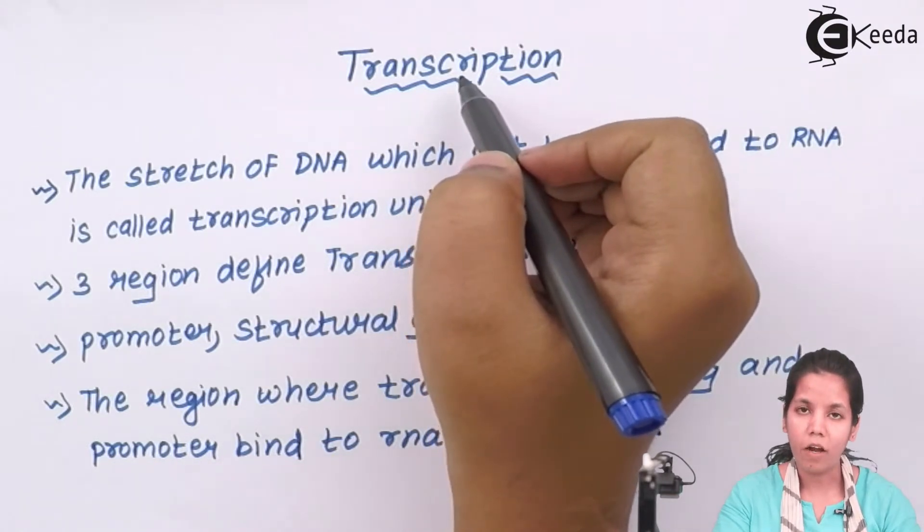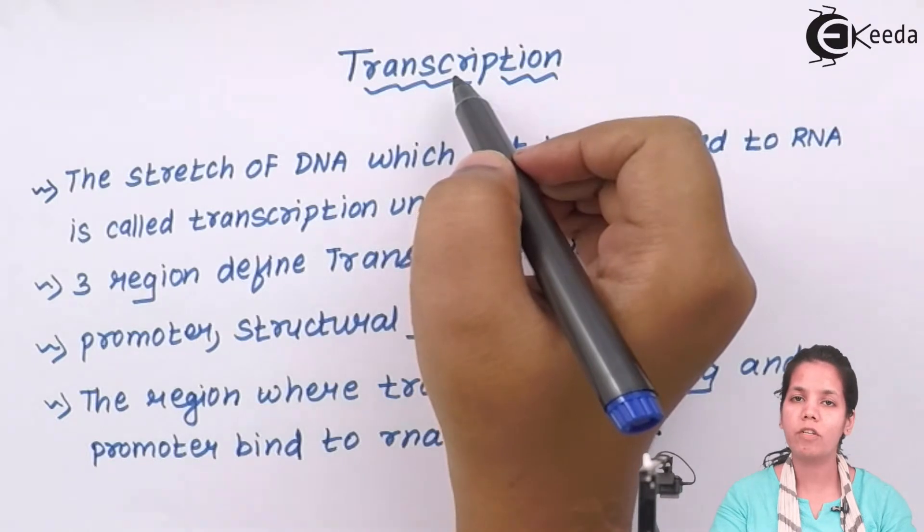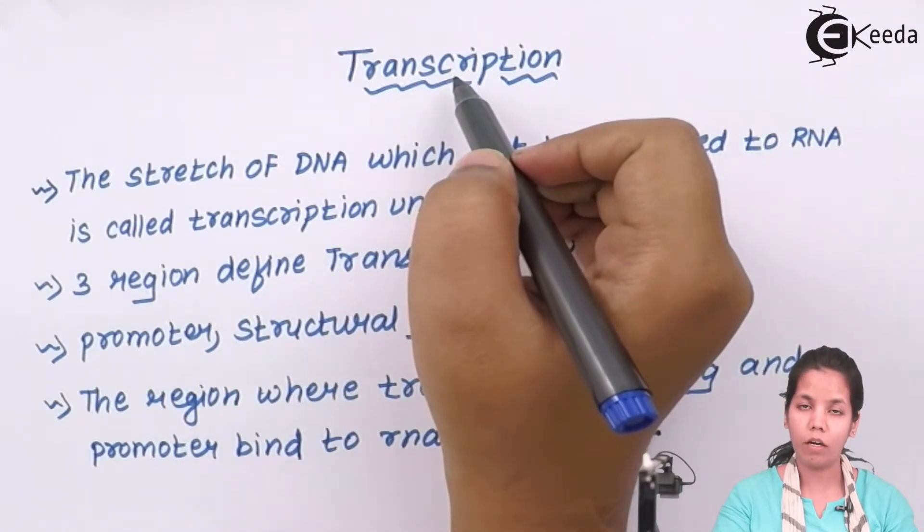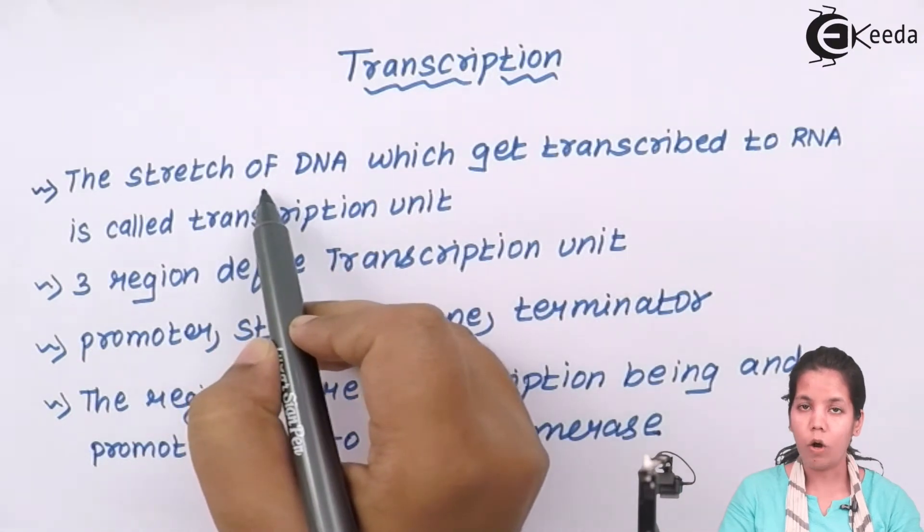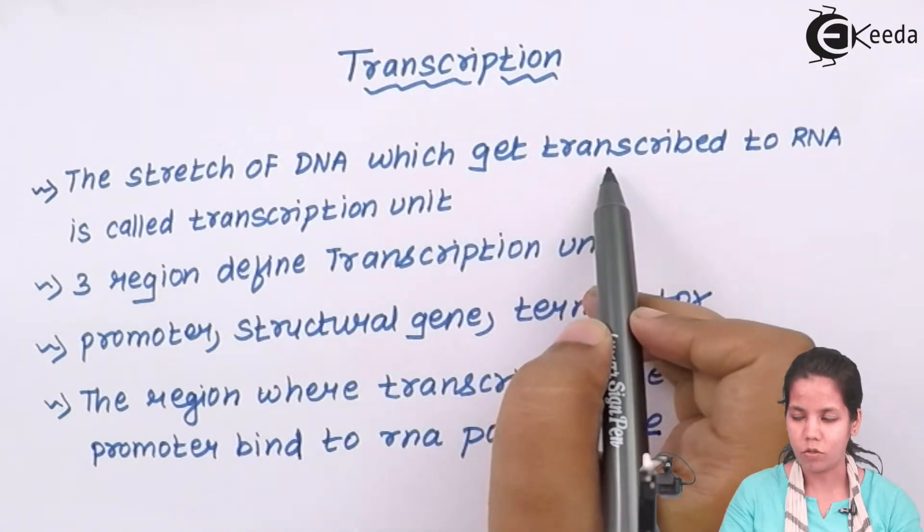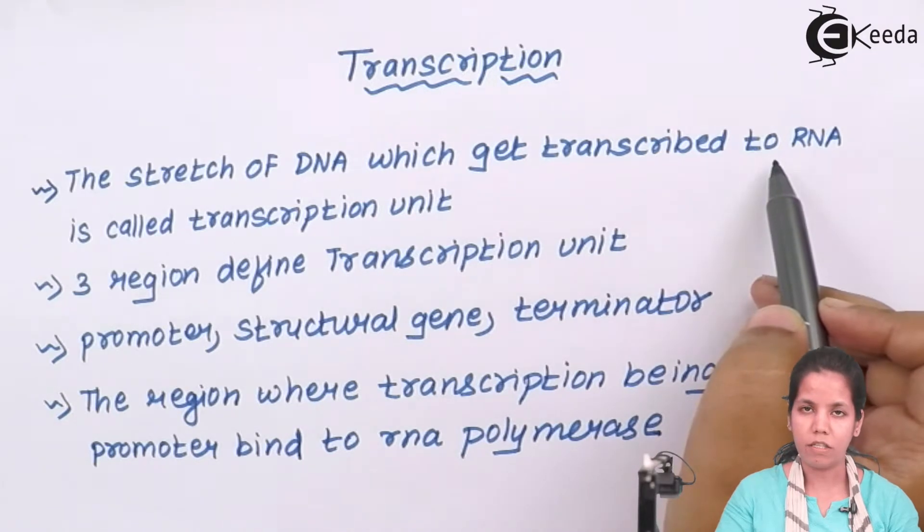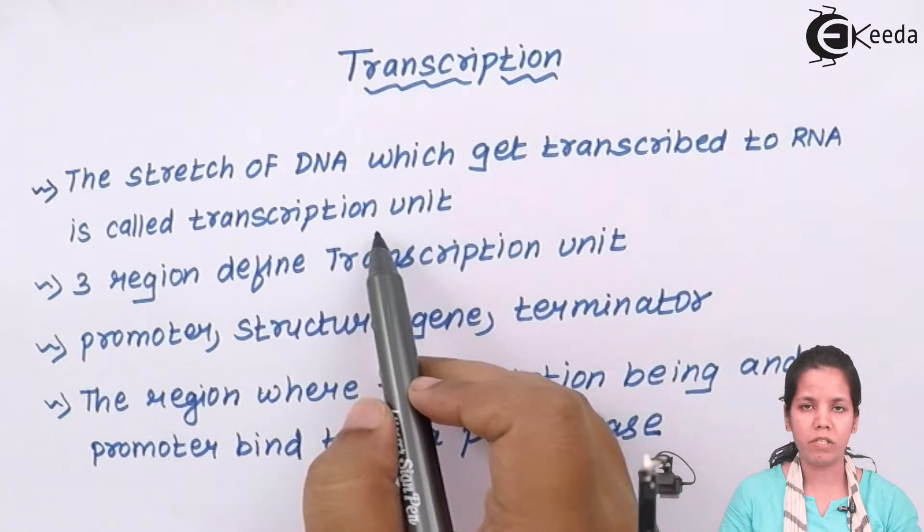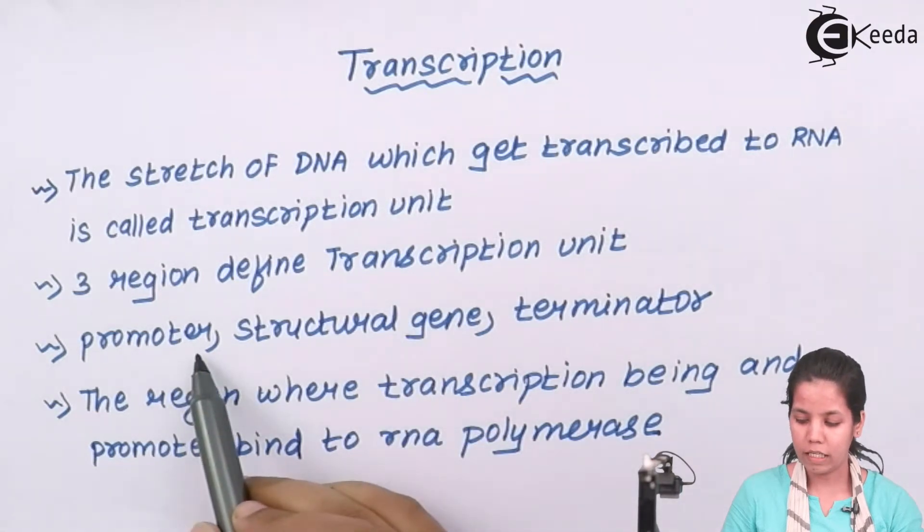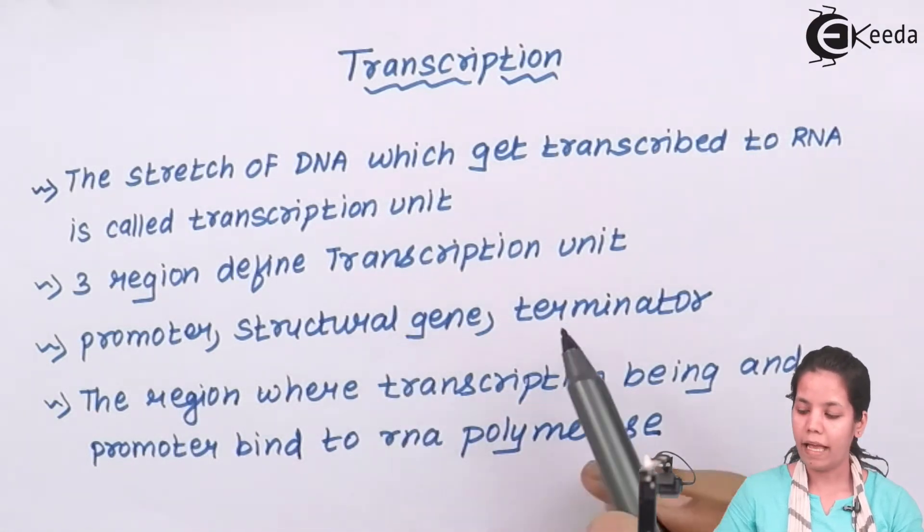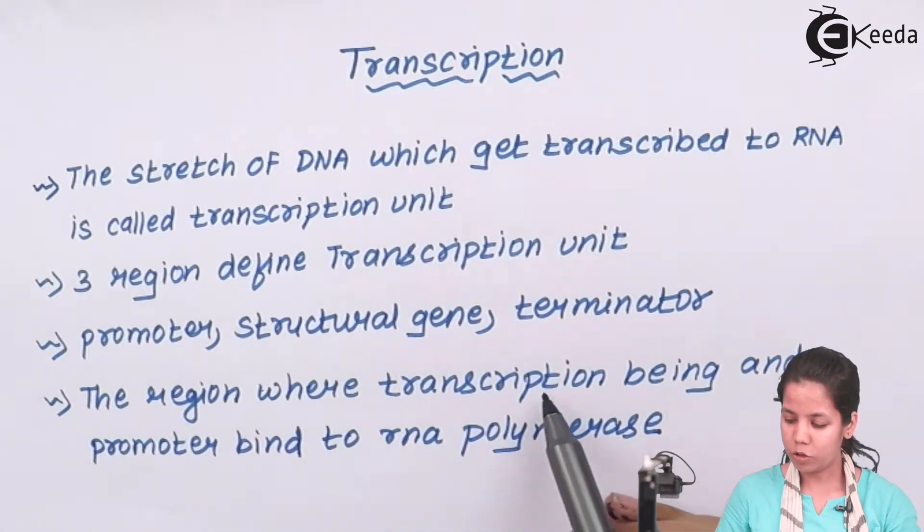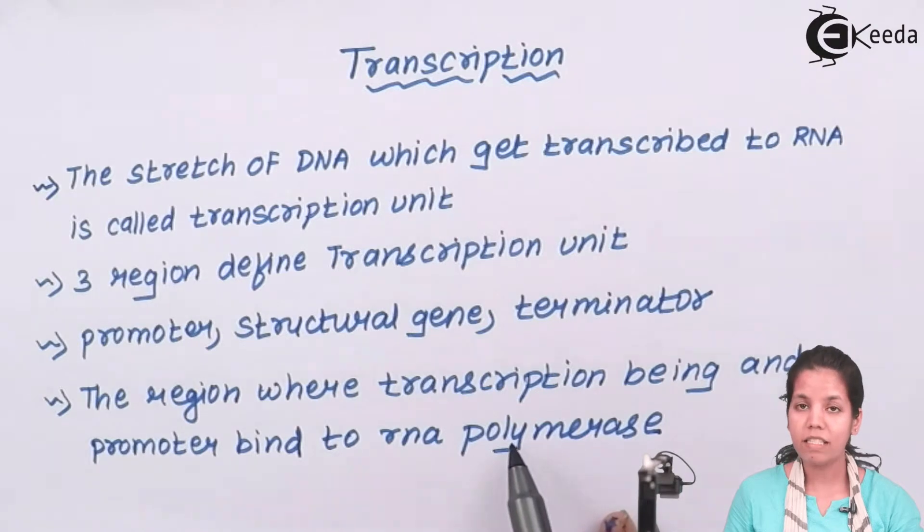Transcription is a process to form mRNA or messenger RNA, the RNA which will have information just to make your proteins inside your body. Does transcription process take place in eukaryotes? Yes it does, even in prokaryotes in certain forms it takes place. The stretch of the DNA which gets transcribed is termed as transcription unit. There are three different regions which are present on transcription unit: first one is promoter region, second one is the structural gene region, and the third one is the termination region or the end region. The region where transcription begins and promoter binds to RNA polymerase is the promoter region.